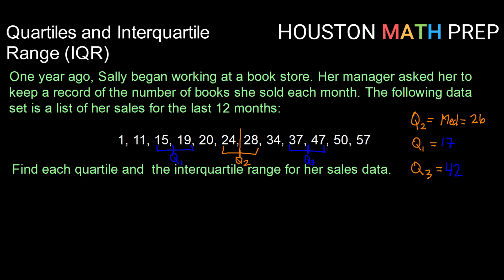All right, so now that I've got my quartiles, let's remember what that tells us. That means that 25% of my data falls between 1 and 17. The next 25% of my data falls between 17 and my median of 26. The third 25% of my data falls between my median and my q3 of 42. And the top 25% of my data falls between q3 and my max value of 57.